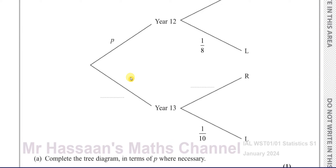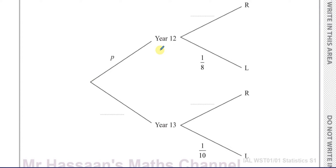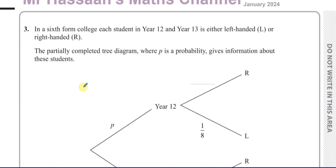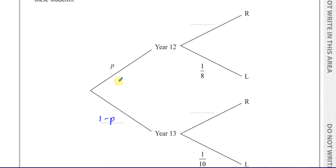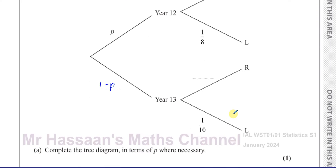Complete the tree diagram in terms of P where necessary. So if P is the probability of a student being in year 12, then the probability of them being in year 13 is 1 minus P, because every student is either in year 12 or year 13. If the probability of a year 12 student being left-handed is 1/8, the probability of being right-handed is 7/8. And if the probability of a year 13 student being left-handed is 1/10, the probability of being right-handed is 9/10. So there is the tree diagram completed in terms of P where necessary.